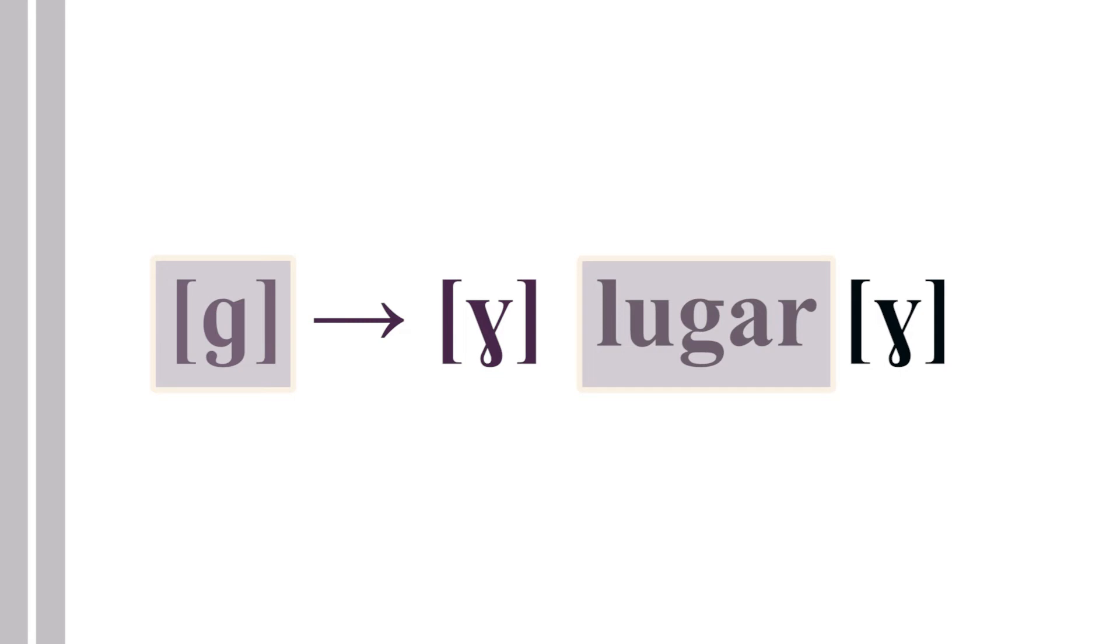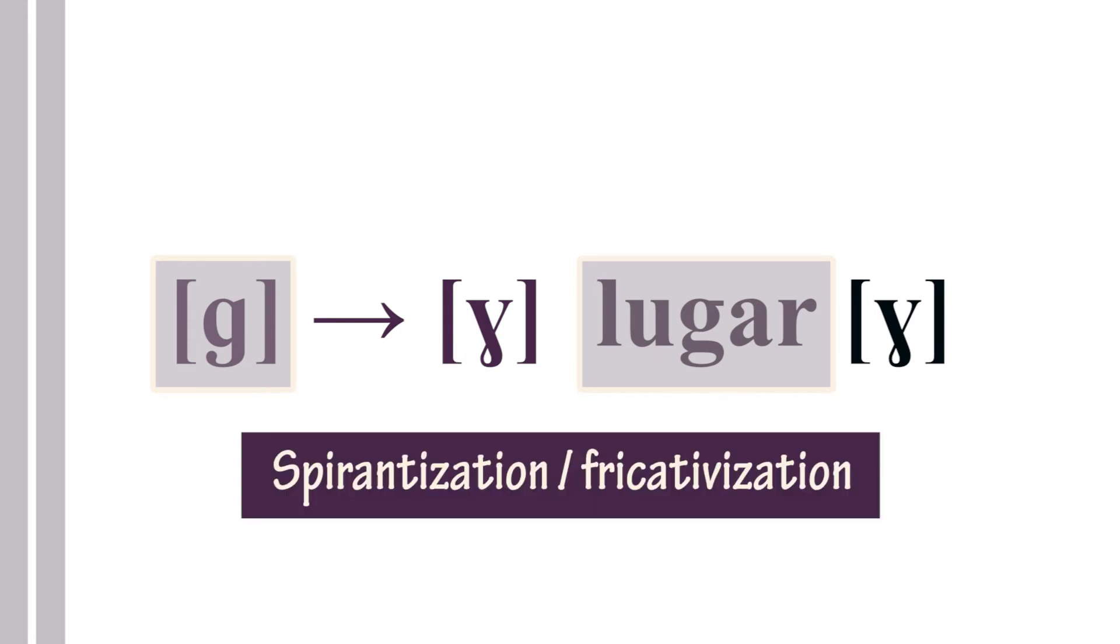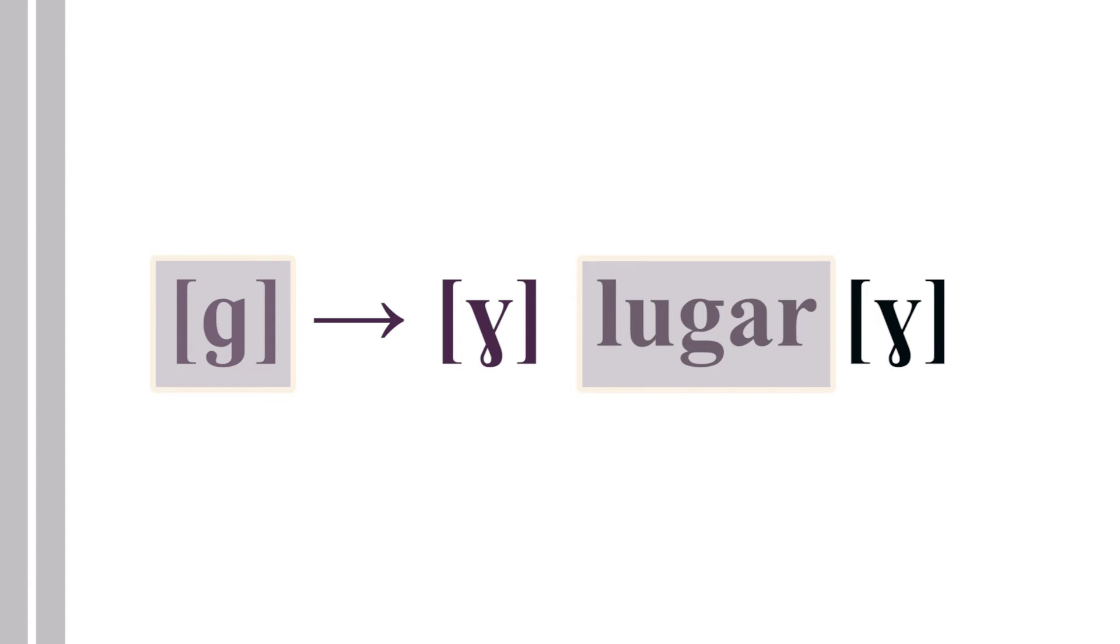The point is, most Spanish speakers, especially when they speak fast, they do not pronounce the G sound as G. They actually spirantize it or fricativize it—which is more difficult to say, so I'm going to stick to spirantize. They spirantize that G sound and they say something like lugar.